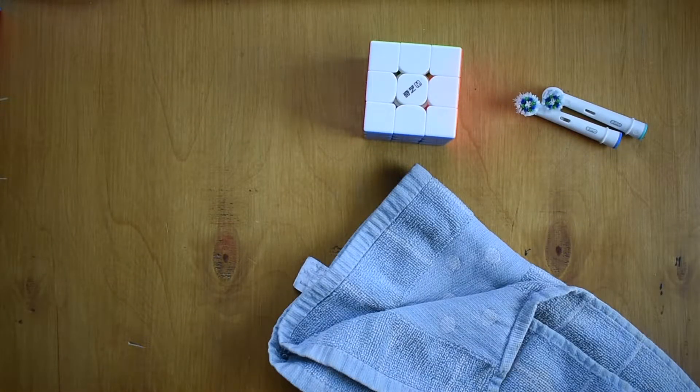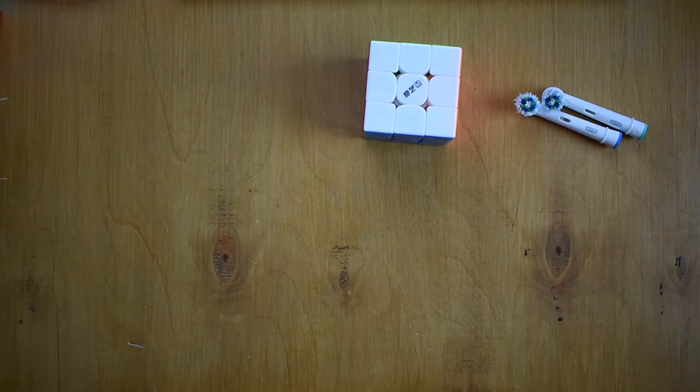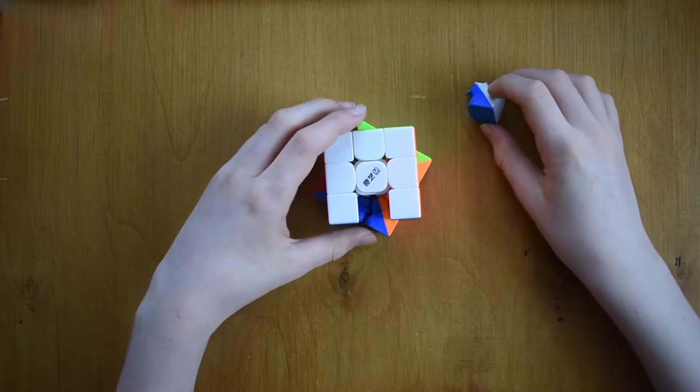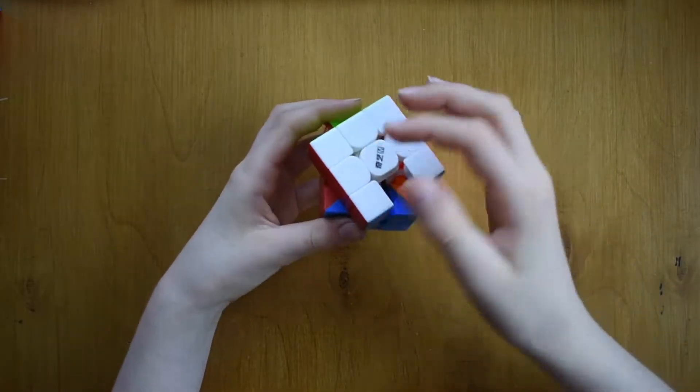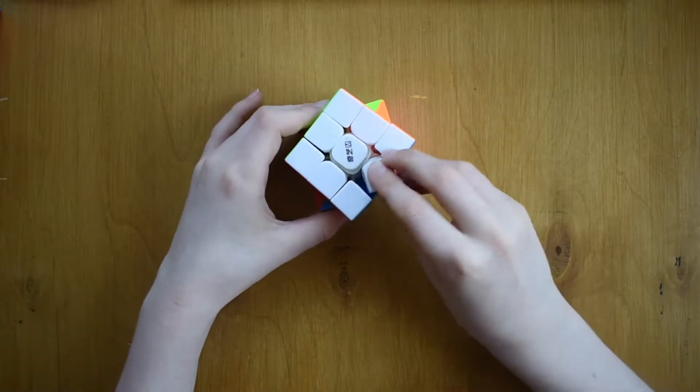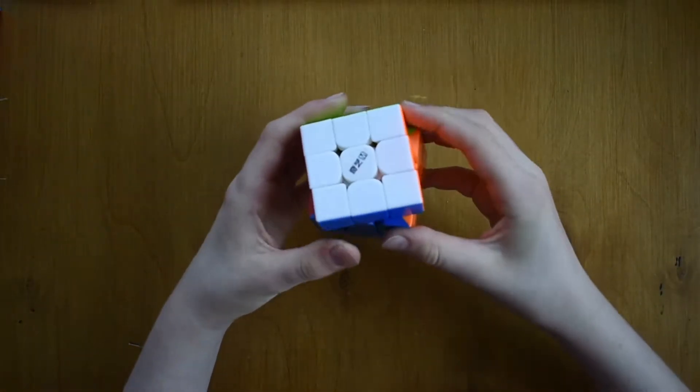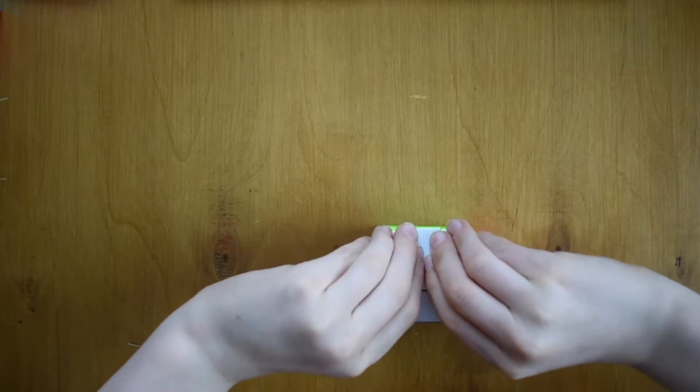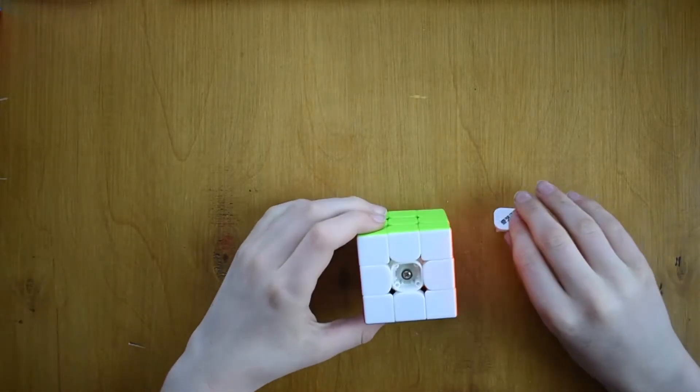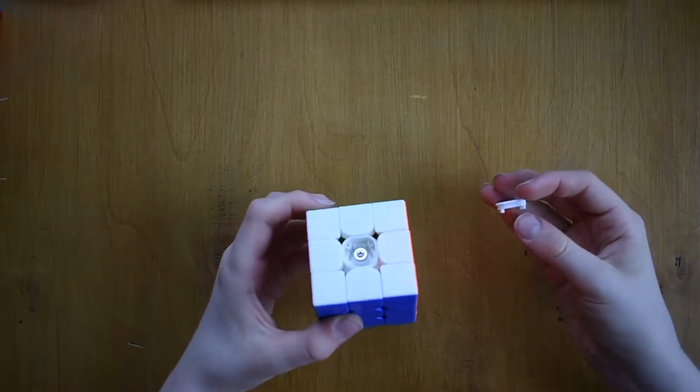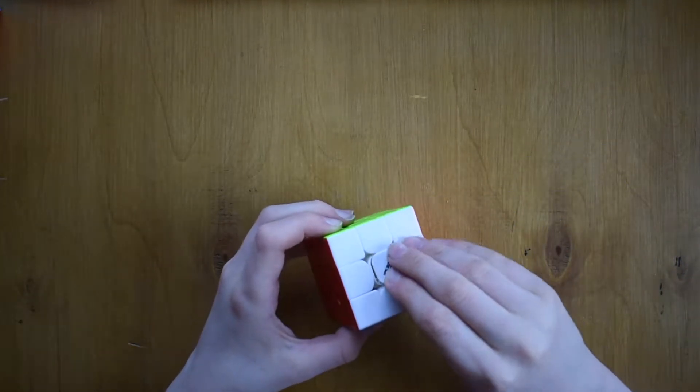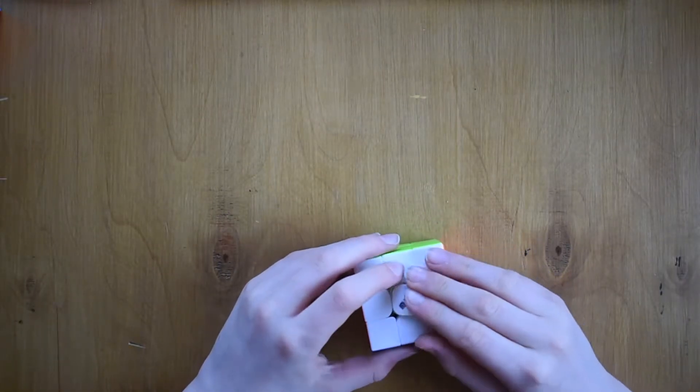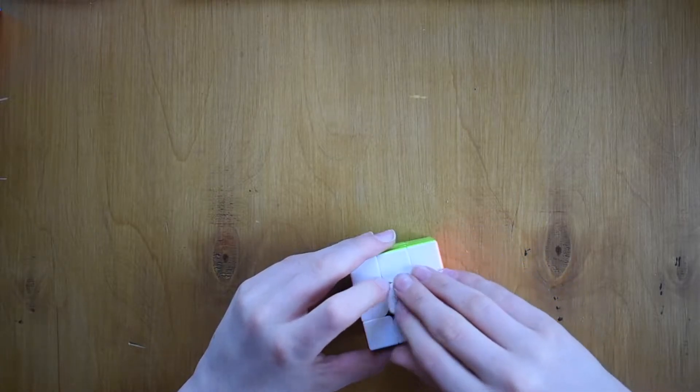I'm just going to put that to the side and let's get straight into disassembling this cube. What you want to do is turn your cube 45 degrees and pop out an edge. If that doesn't work then you're going to want to take off the center cap if you can and then unscrew the screw until you can get a corner edge out.